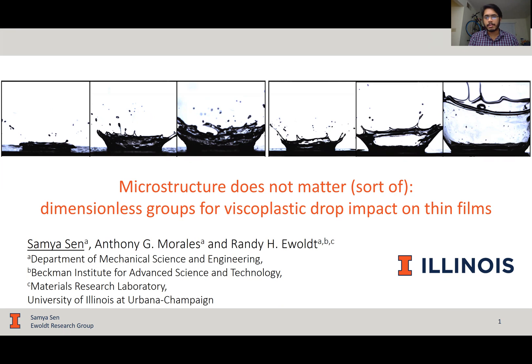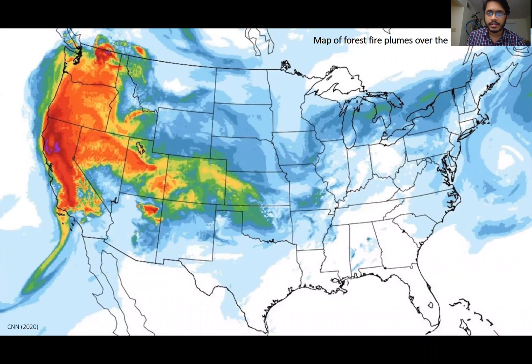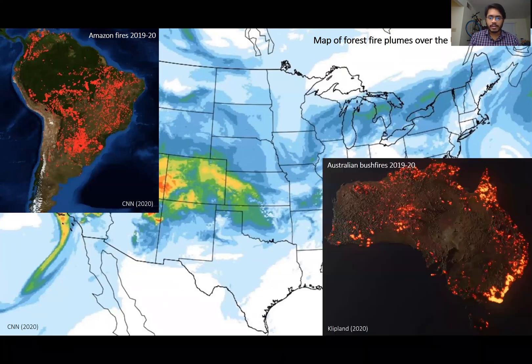This project is motivated by the application of drop impact physics of yield stress fluids in fire suppression. To refresh your memory about the severity of this issue, here is a map of the forest fire plumes over the United States in the past year. Here is something similar for the Amazon rainforest fires in South America and the Australian bushfires, which are all very serious issues affecting each of us globally.